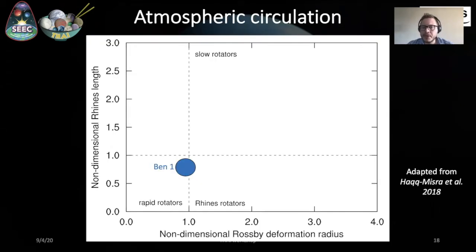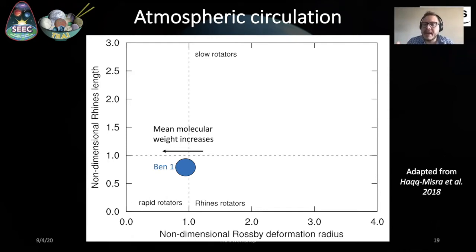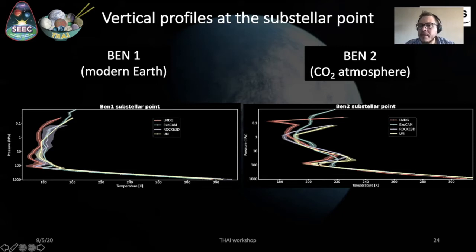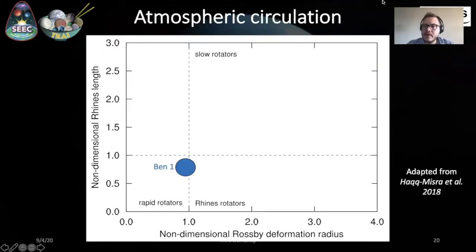To understand this, we go back to the plot showing the position of TRAPPIST-1e on the Rhines length and Rossby deformation radius diagram. Naively, one might think that as we go from BN1 to BN2, from a nitrogen-dominated atmosphere to a CO2-dominated atmosphere, we increase the molecular weight and thus decrease the atmospheric scale height and the Rossby deformation radius, moving to the left part of the diagram. But in fact, as illustrated by plots showing the temperature structure at the substellar point for BN1 and BN2, the scale height of the troposphere — which is the key parameter controlling the Rossby deformation radius — is actually higher for the BN2 case. This is most likely due to the stronger greenhouse effect in a CO2-dominated atmosphere, which not only makes the troposphere warmer but also pushes it higher up. So as we go from a nitrogen-dominated to a CO2-dominated atmosphere, we move in fact to the right part of the diagram, closer to the Rhines rotator regime.